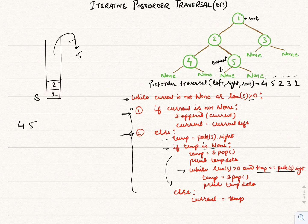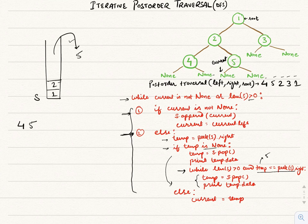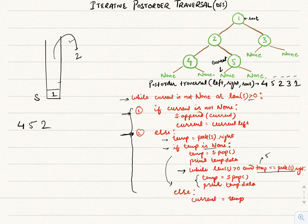We check whether 5 has a right side to explore. Temp's value is 5, and peek s's right — which is 2's right — is also 5. This means it satisfies the while condition, so we pop node 2 from the stack and print 2 as well.